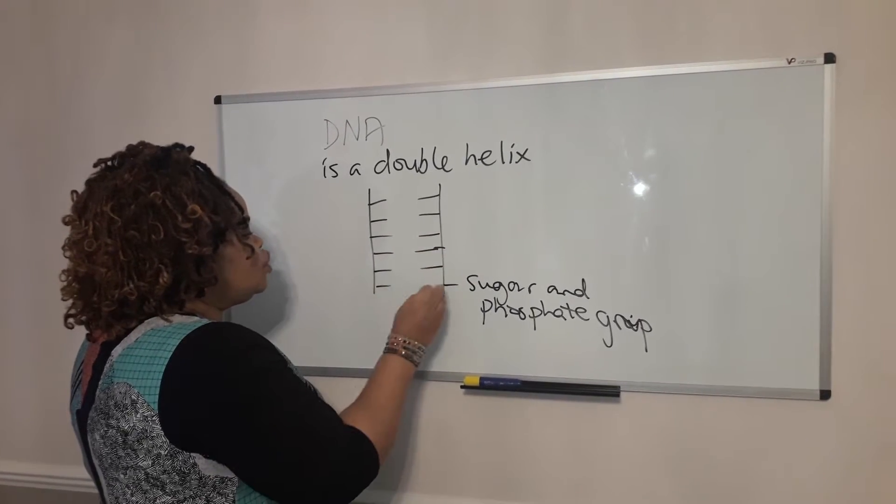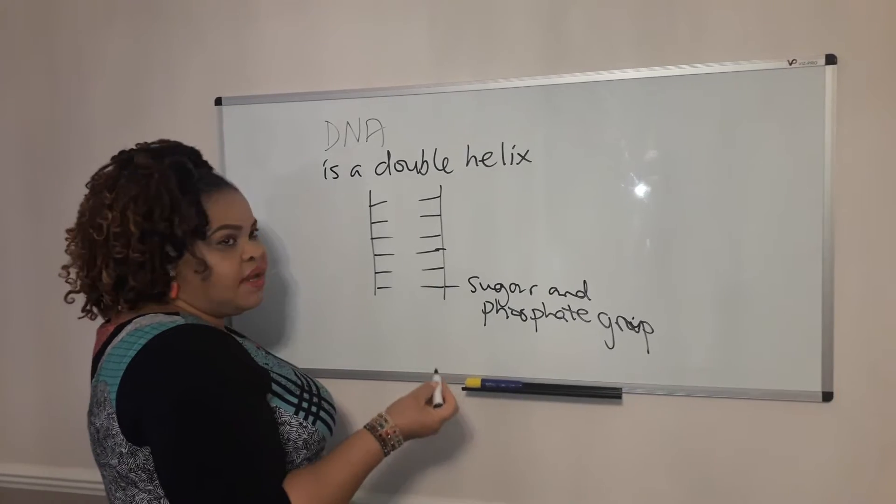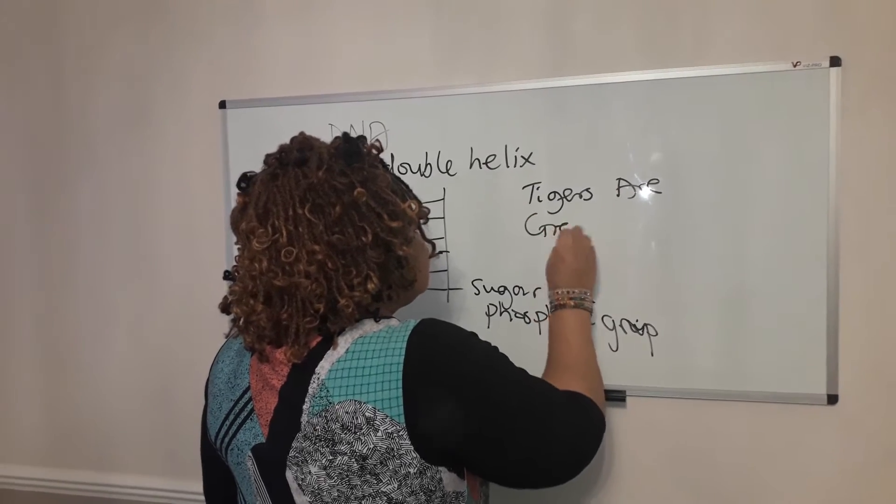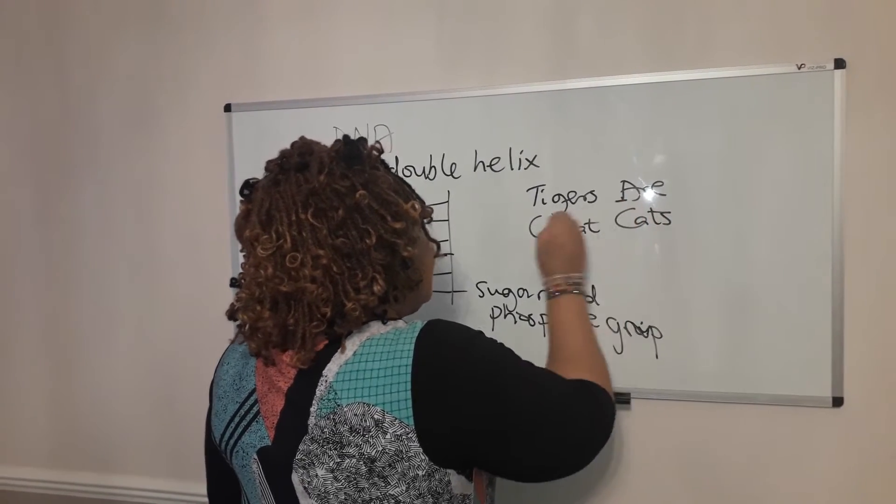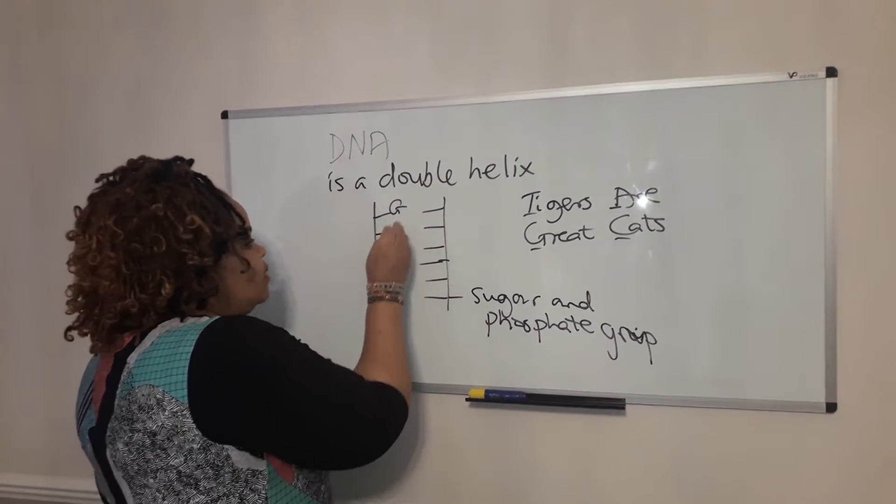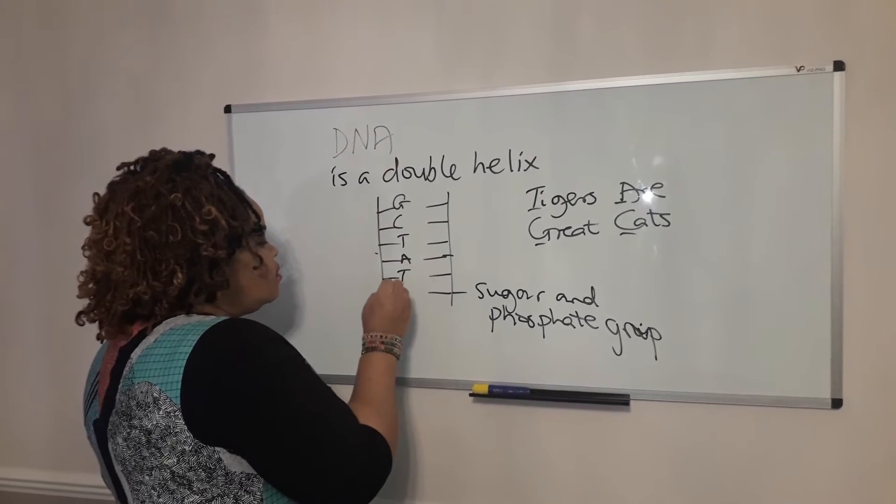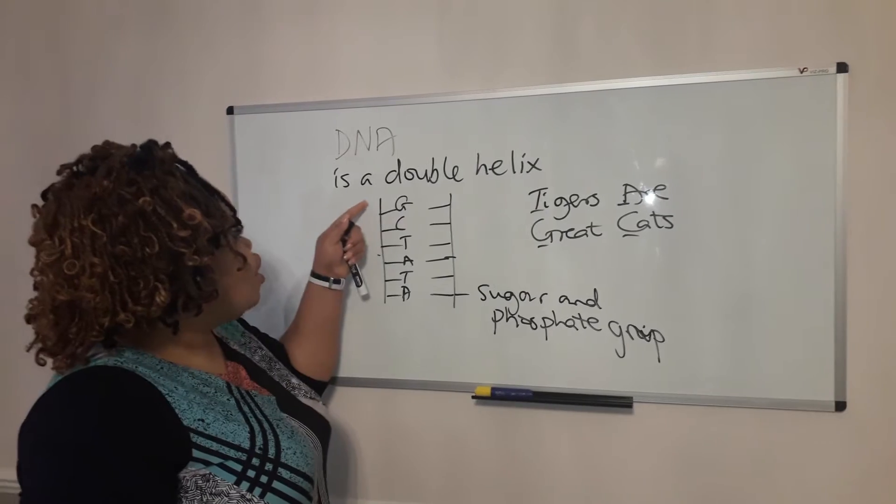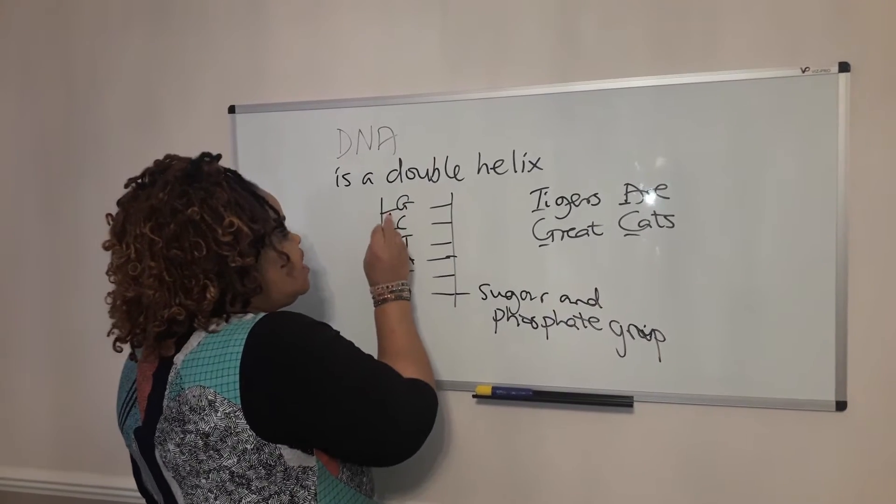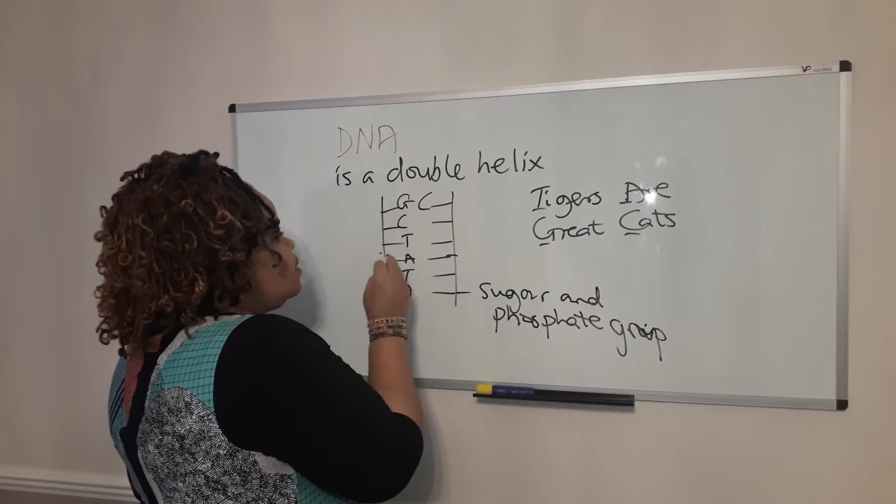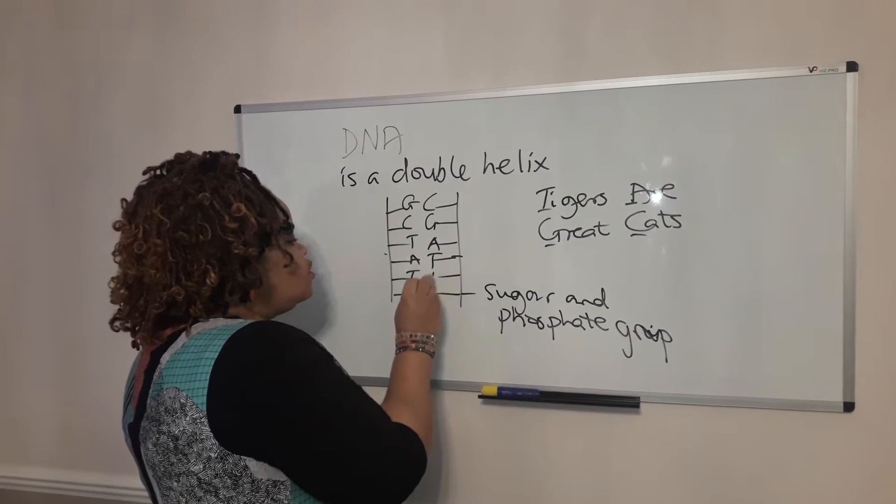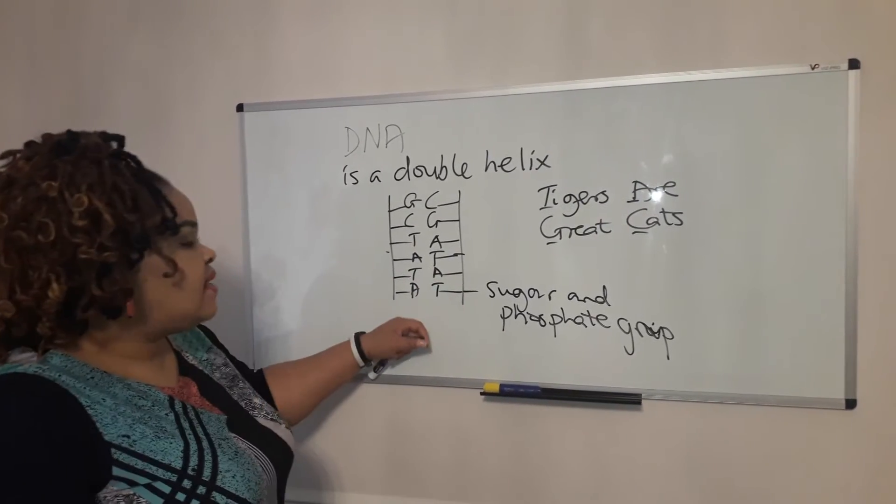A very easy way to remember is Tigers Are Great Cats. So A always goes with T, G always goes with C. I'm going to put the bases at random: C, T, A, A or T, and another A. Once you know the first strand, you can work out the complementary base strand. So if this is a G, that's going to be a C. T goes with A, A goes with T, T goes with A, and A goes with T. That is the structure of the DNA.